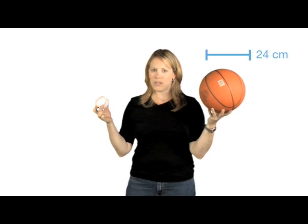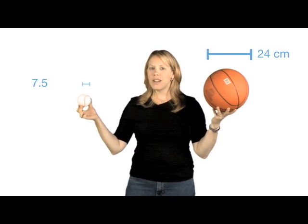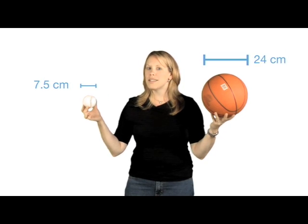So we could use the basketball as our Earth and the baseball as our moon. Now, a basketball is 24 centimeters in diameter, and the baseball is 7 1⁄2 centimeters in diameter. So let's apply our proportion.